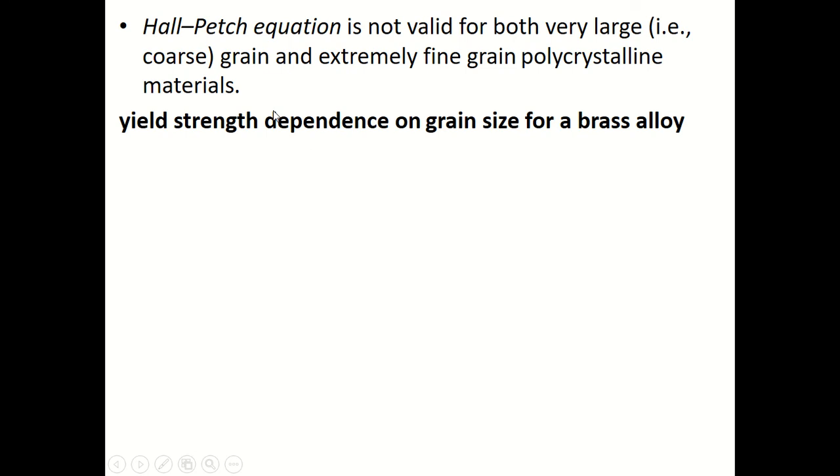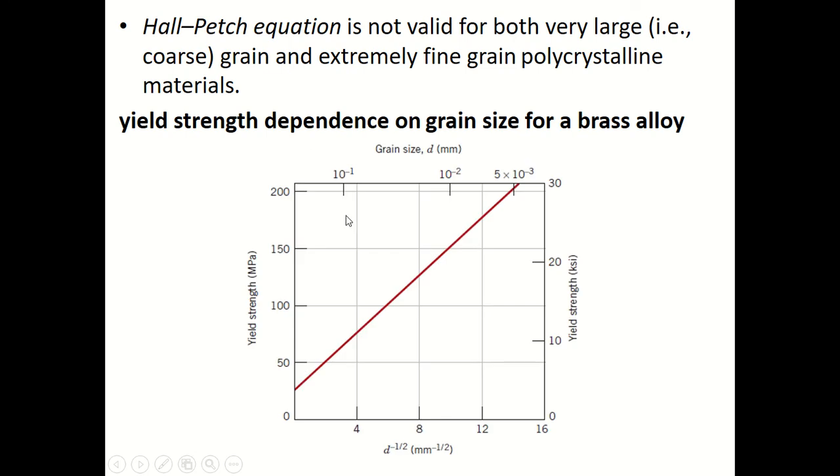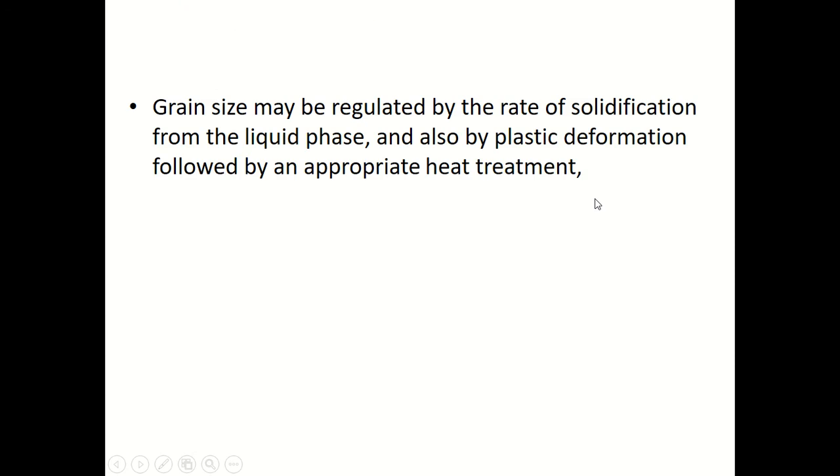What is shown below is the yield strength dependence on grain size for a brass alloy. You can see grain size is taken on the x-axis and this is the yield strength. As the grain size diameter increases, which means the grains become more coarse, the yield strength value decreases. As the grain size decreases, the yield strength value increases.